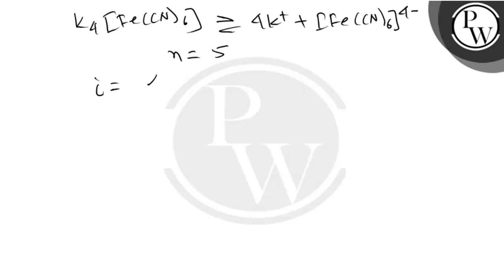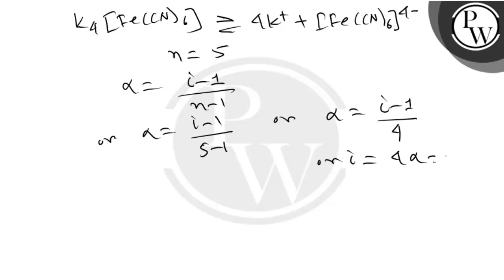i is given as α(n-1)/(n-1). Sorry, there is a slight mistake here. Let me correct that. Alpha is given as α = (i-1)/(n-1), or α = (i-1)/(5-1), or α = (i-1)/4, or i = 4α + 1.